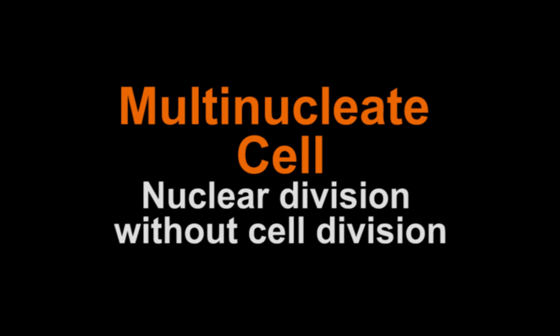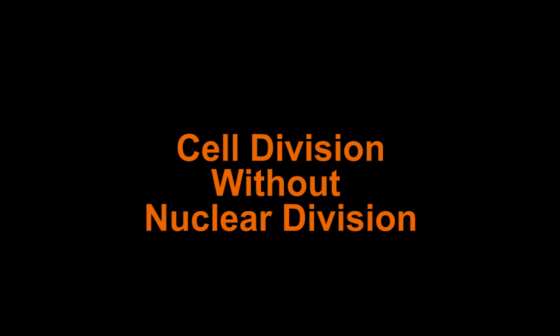A coenocyte is a large cell with hundreds to thousands of nuclei. In algae, fungi, and the cells of some seed plants, cell division without nuclear division can occur. However, this usually happens in multinucleate cells that already have a lot of nuclei.